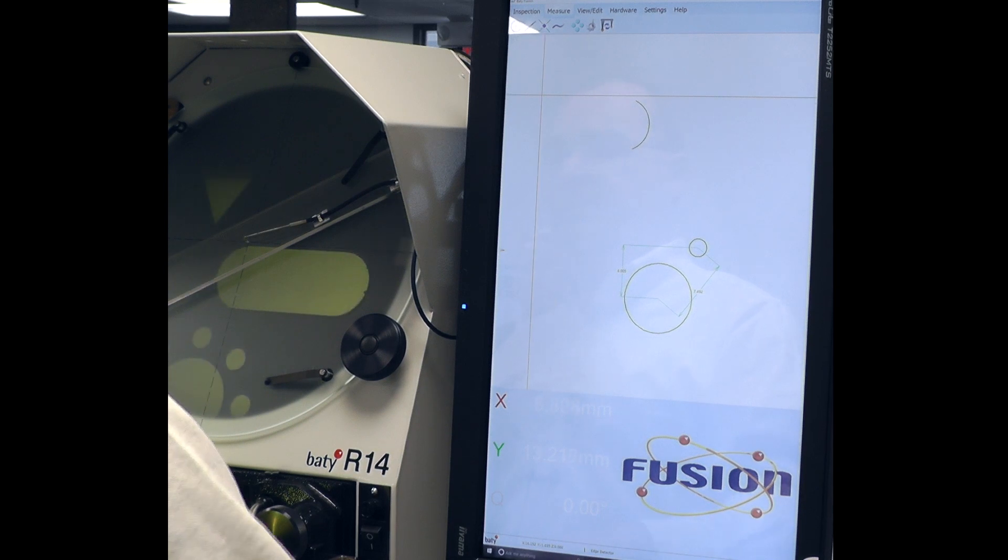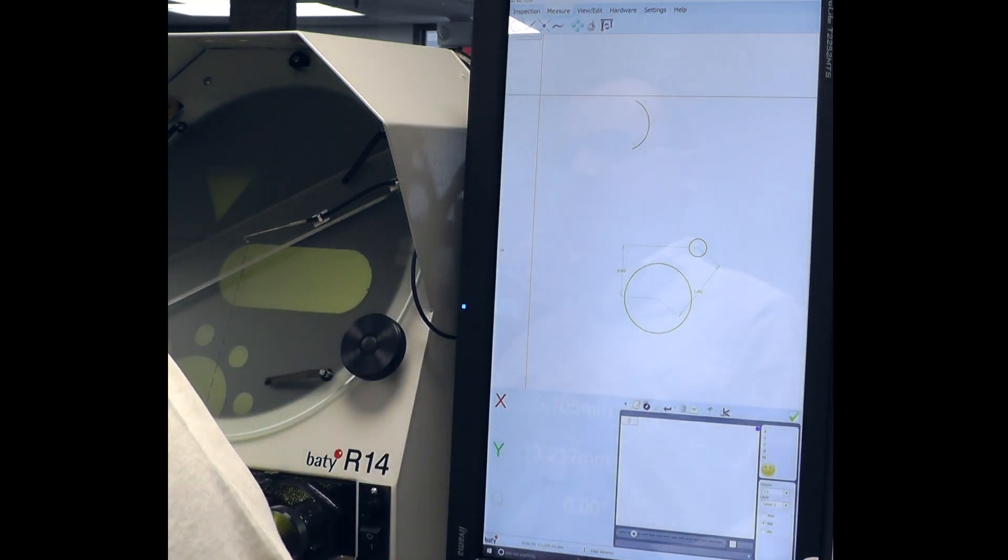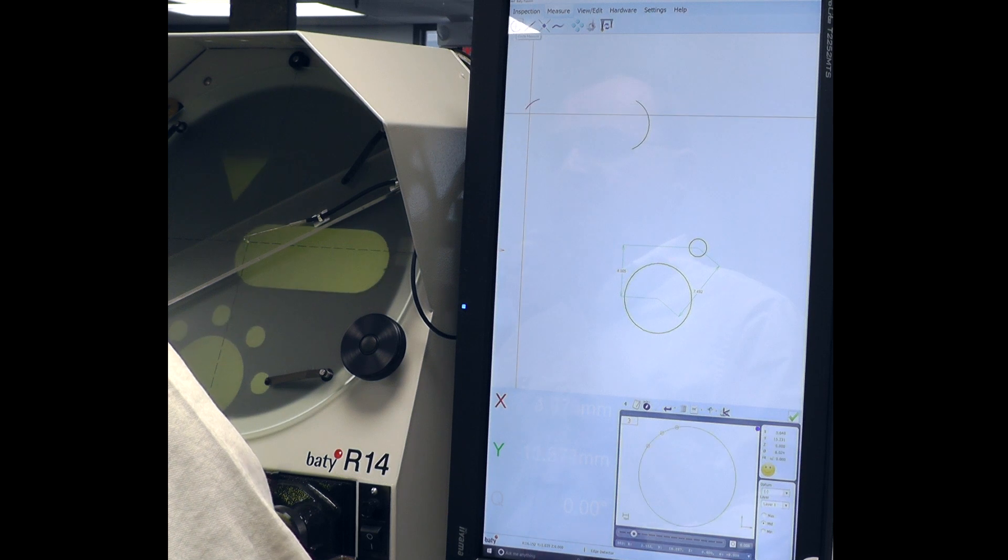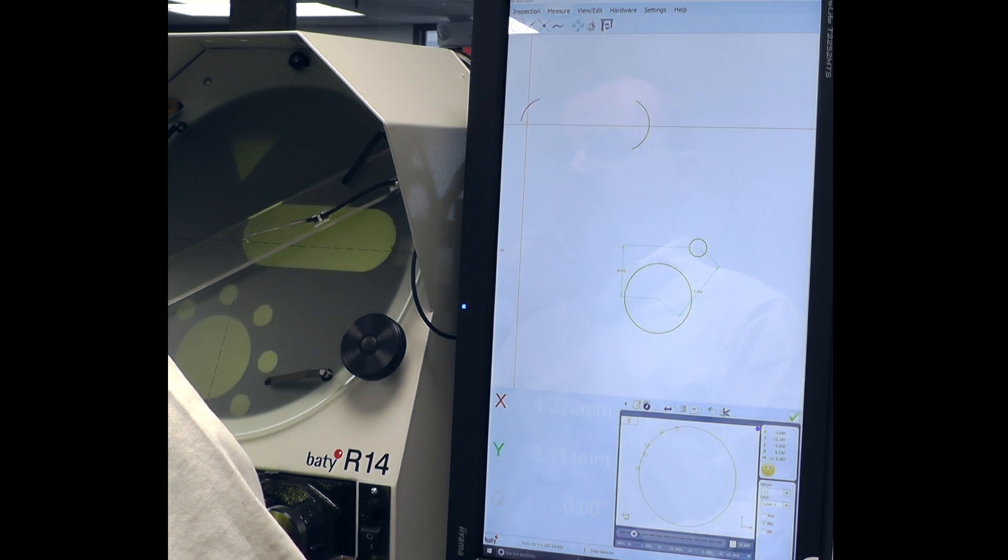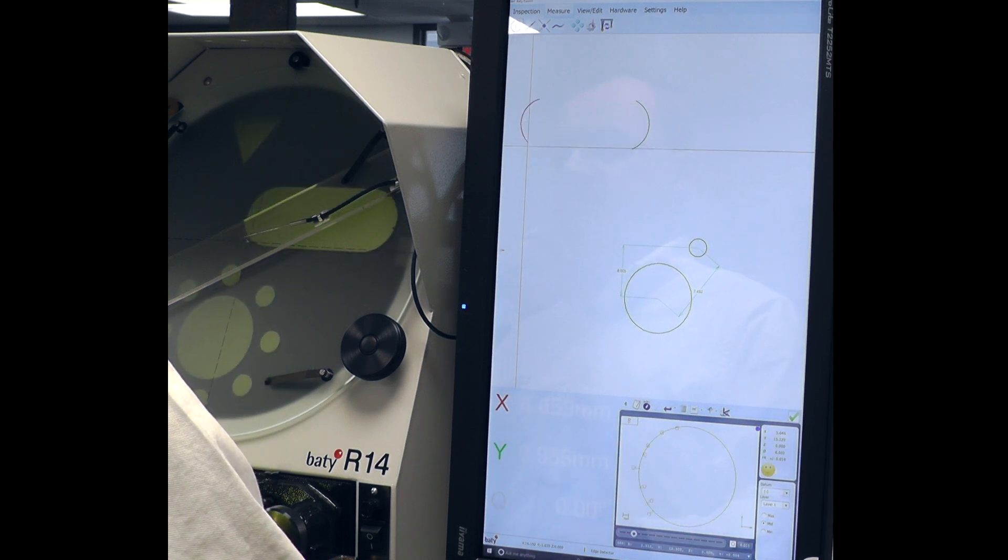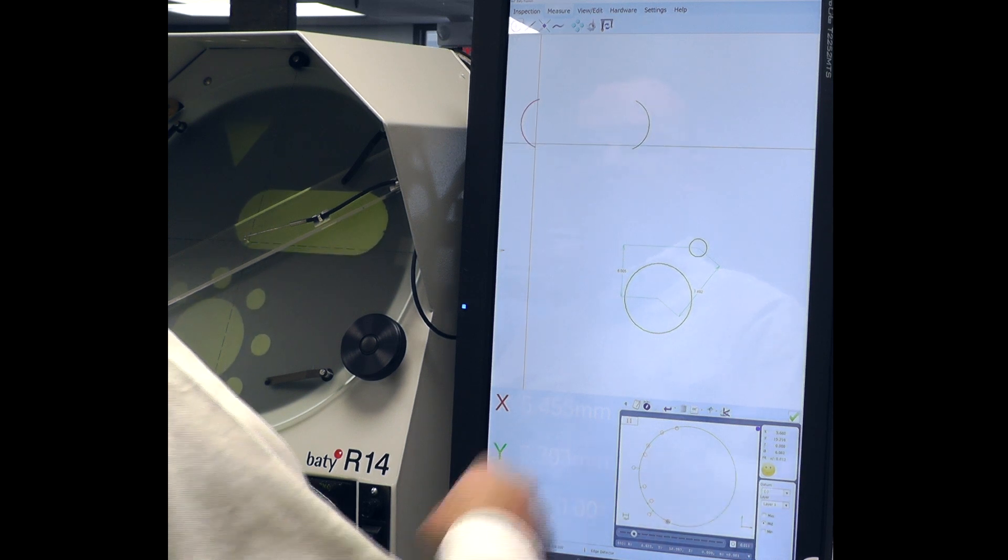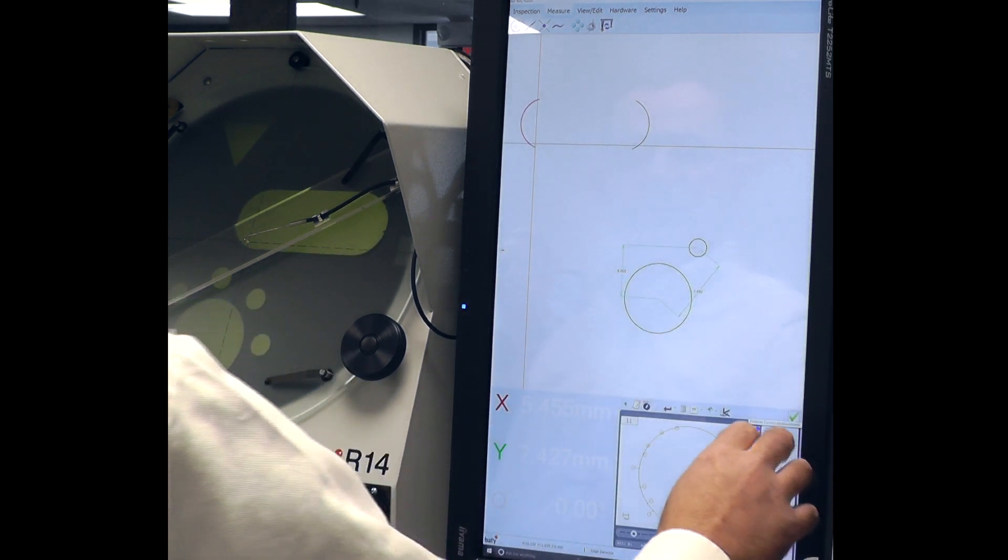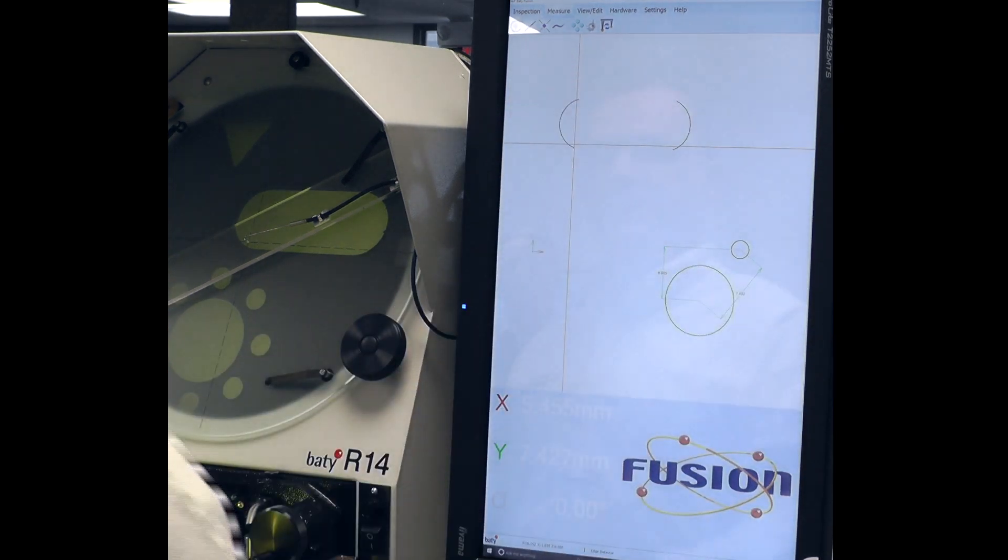Go down to the other end. Do the other arc. Select finish. Got our two arcs measured.